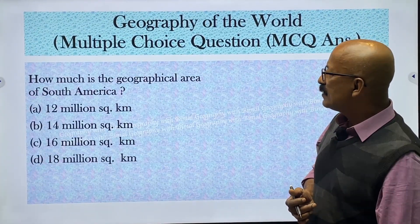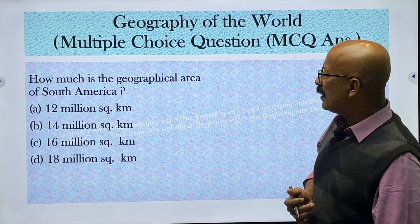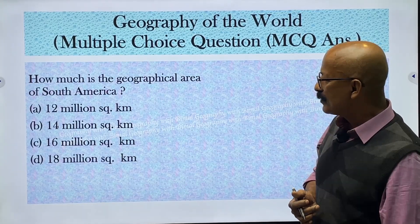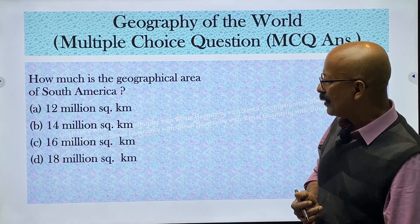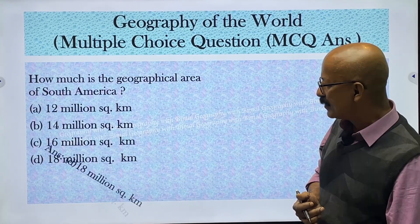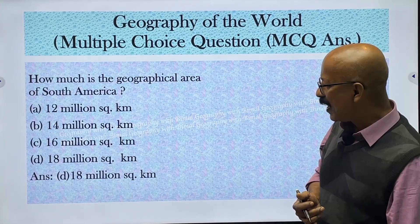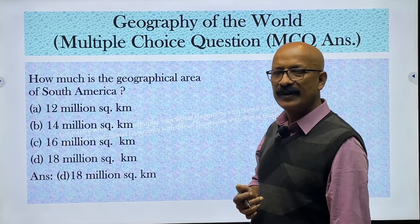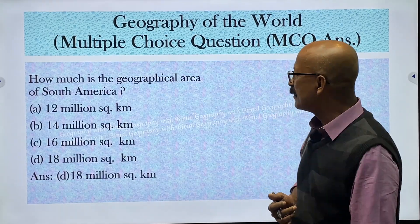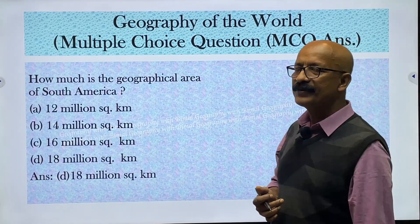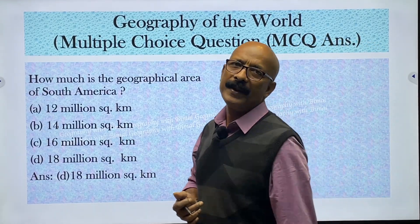What is the geographical area of South America? Options are 12 million, 14 million, 16 million, and 18 million square kilometers. The correct answer is 18 million square kilometers — that is the geographical area of South America.